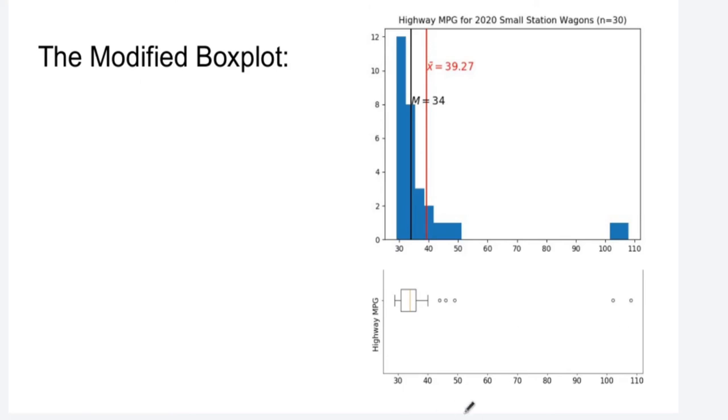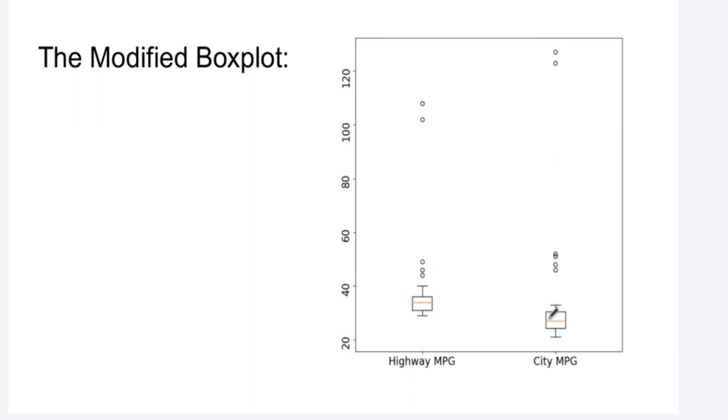An advantage of the box plot is that we can compare two different variables quite easily. Here's highway miles per gallon and city miles per gallon for the same cars. You can get an idea that a car that has a very high city miles per gallon might also have a very high highway miles per gallon.